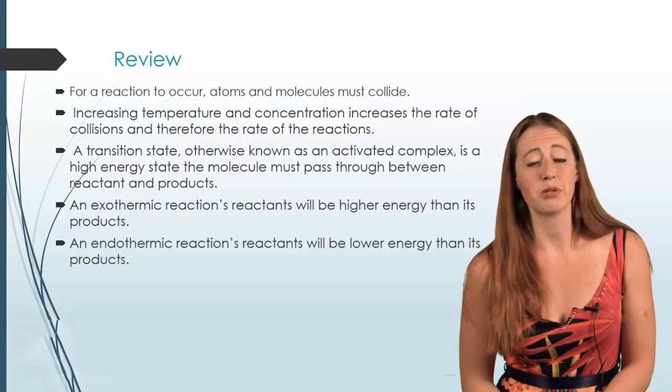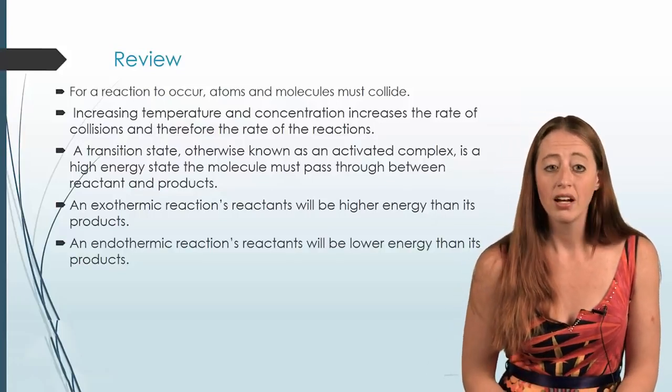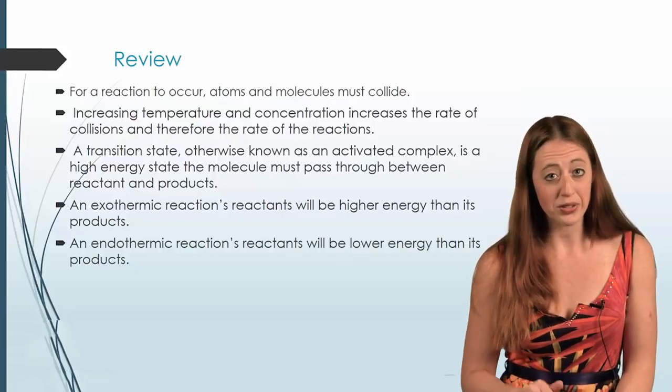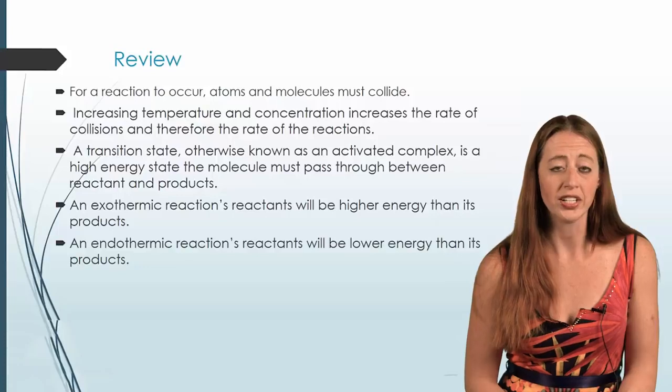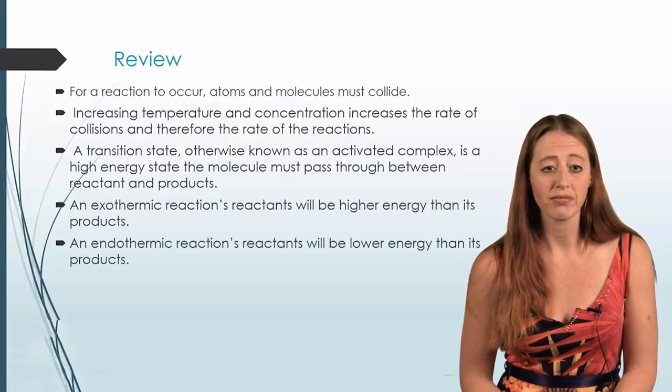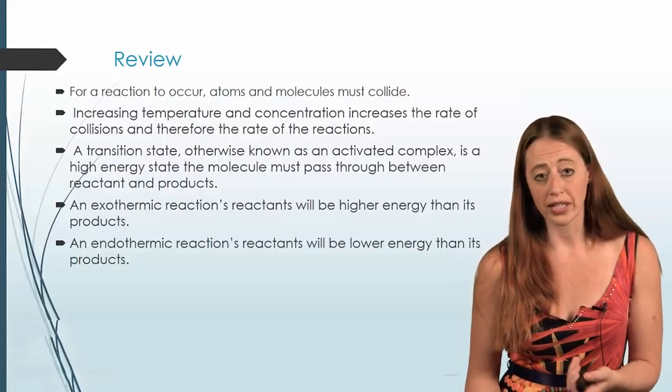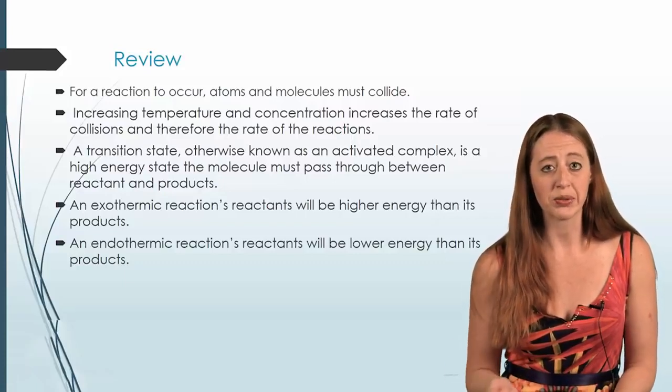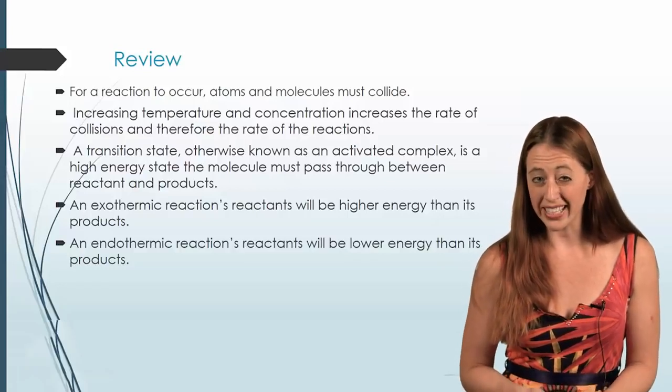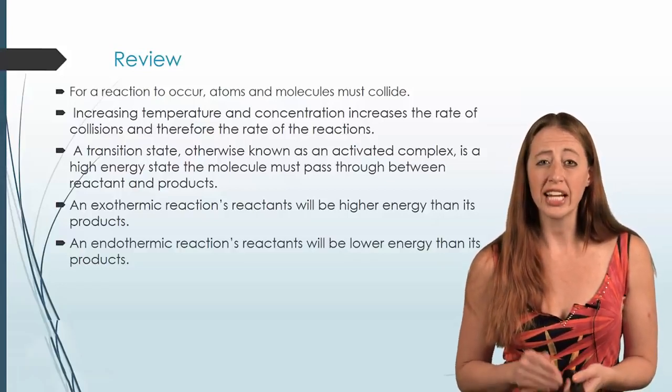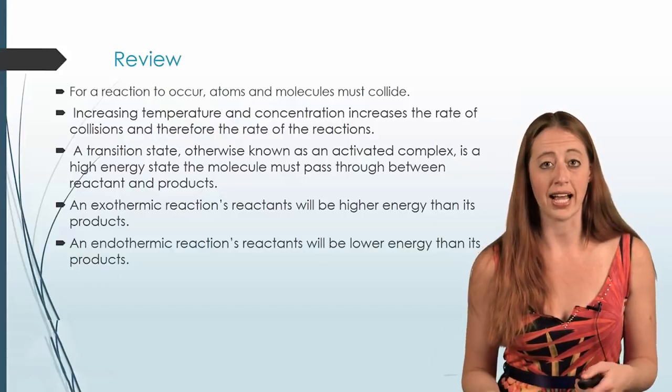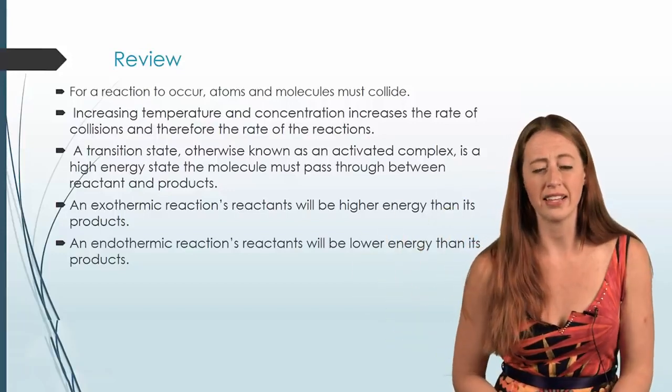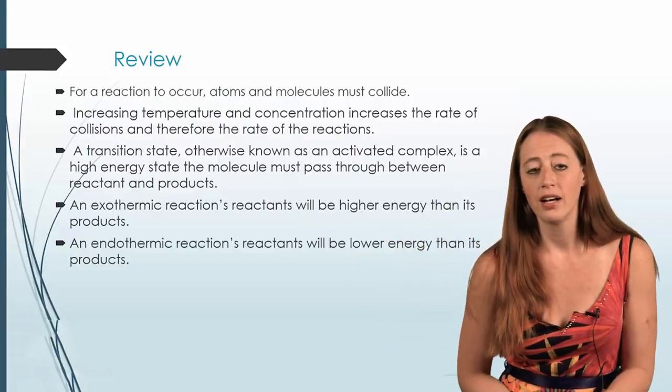So this is a very conceptual video. So let's just quick review all the main points. For a reaction to occur, atoms and molecules must collide. If you increase either your temperature or your concentration, you'll generally increase your reaction rate. A transition state or an activated complex is a high energy state that the molecules must pass through between your reactants and your products. We didn't talk about it here, but I should mention that you can have two or three transition states in a reaction. So you'll often see a kind of energy diagram that looks like this. And that's okay. There's some of those in your book that you can look at if you want.